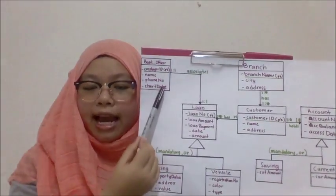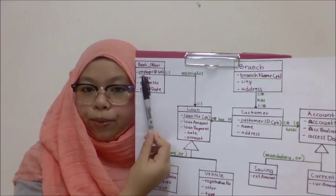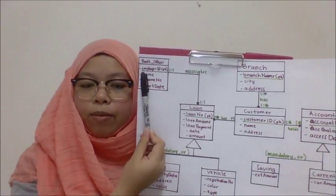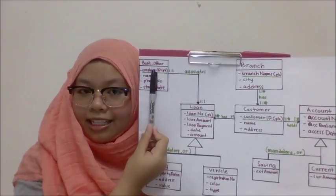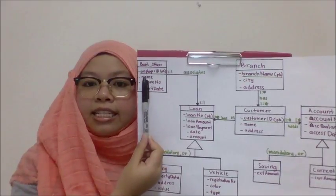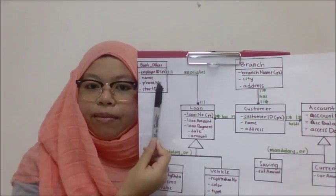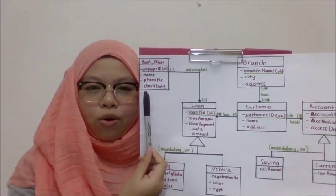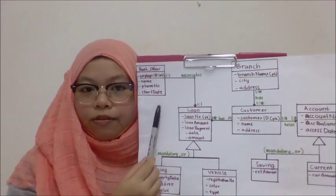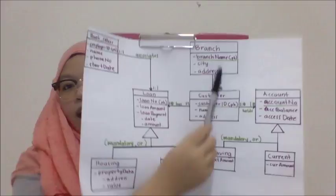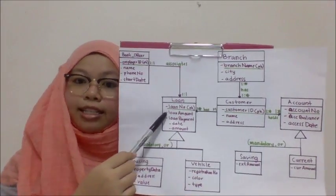The next entity is the bank officer entity. The underlined attribute is the primary key, which is the employee ID. The additional attributes are name, phone number, and start date of the bank officer.